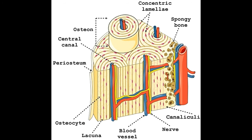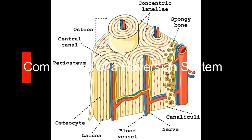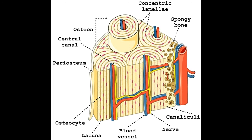An osteon comprises a long, hollow central canal surrounded by concentric layers called lamellae. This central canal is referred to as the Haversian canal, and the long axis of the osteon is parallel to the long axis of the bone. Haversian canals are located at the center; small blood vessels present in the central canal supply blood to the osteocytes, and the canal also contains nerve filaments. These canals are connected to each other by Volkmann's canals, which are transverse vessels running perpendicular to the long axis. Volkmann's canals also connect the blood vessels in the central Haversian canals to the periosteum, and they are not surrounded by concentric lamellae.